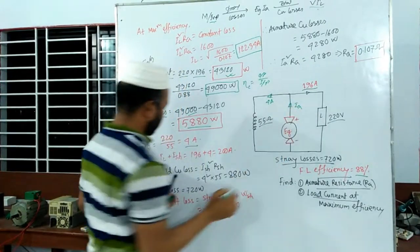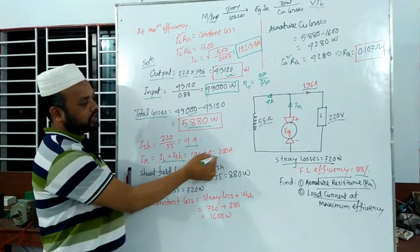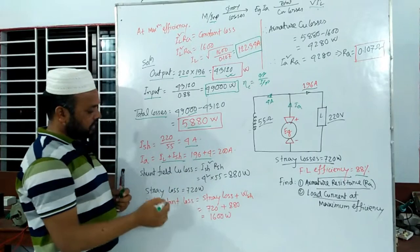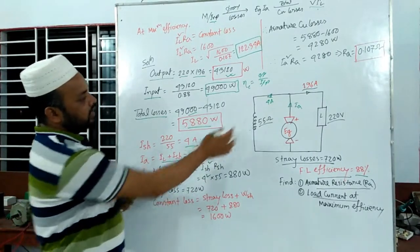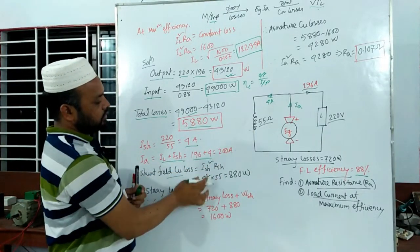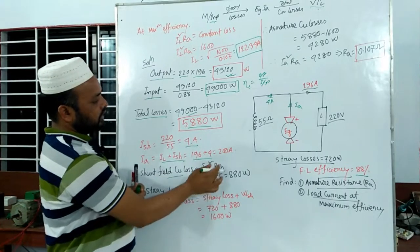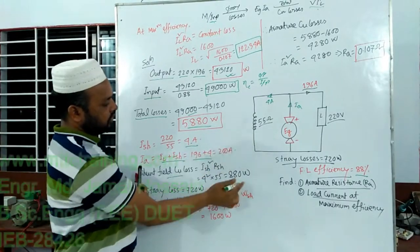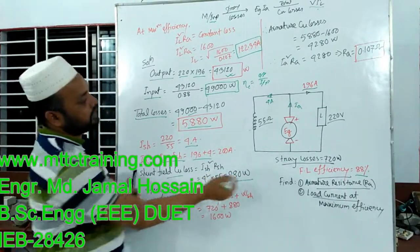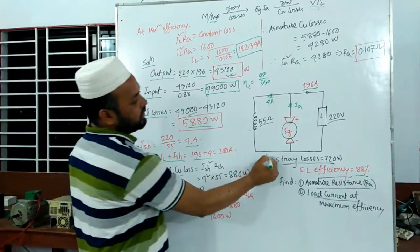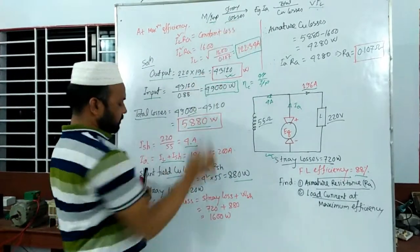It is equal to the full-load condition. The copper loss is IS² × R, where IS² is the armature current squared and R is the resistance. This gives 880 watts. This loss value was given to us.